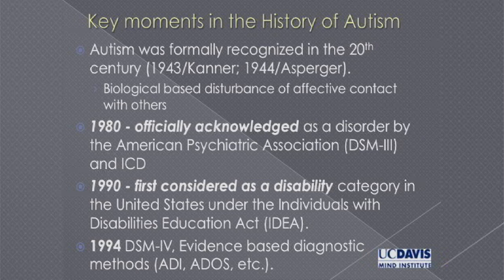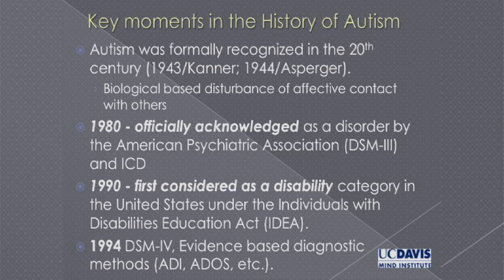In education, autism wasn't really part of the classification system that allowed schools to provide extra service to a child until 1990. So now we're talking about a 20-year period — autism has only been something we've focused on in schools for about 22 years. We've really only had a good diagnostic system since 1994. There's a controversy about what has led to the increasing prevalence of autism in society. Clearly, one factor is that we didn't really have an accurate diagnostic system until 1994, and then once that came about, it took at least a generation to train people in its use.